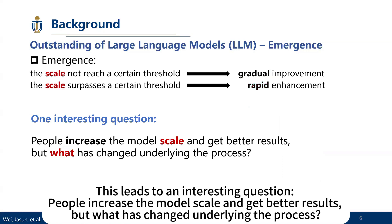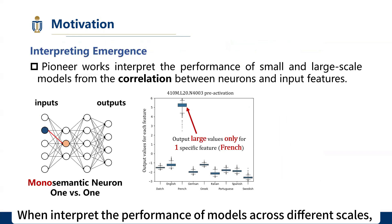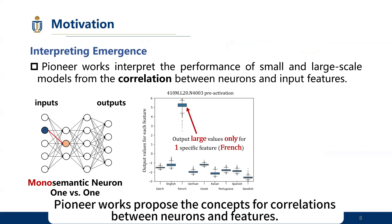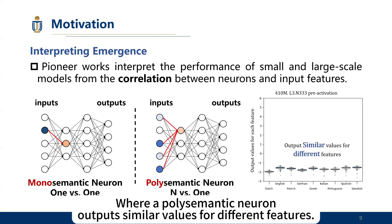This leads to an interesting question: people increase the model scale and get better results, but what has changed underlying the process? When interpreting the performance of models across different scales, pioneer works propose concepts for correlations between neurons and features. A monosemantic neuron is supposed to only activate for one specific feature, whereas a polysemantic neuron outputs similar values for different features.